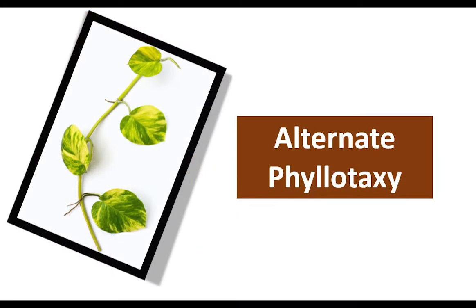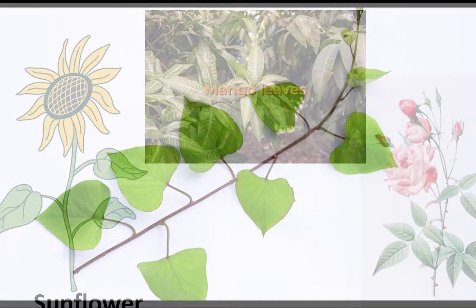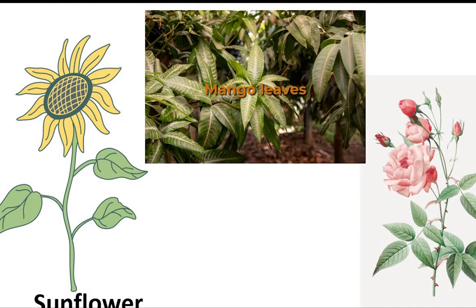Alternate Arrangement: In this type of arrangement, only one leaf arises from each node. The leaves are attached to the stem in a spiral pattern. Some examples of plants with alternate arrangement of leaves are Sunflower, Mango, and China Rose.